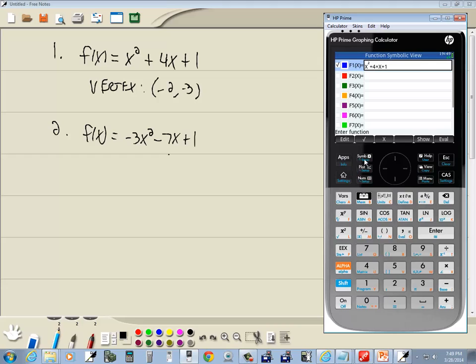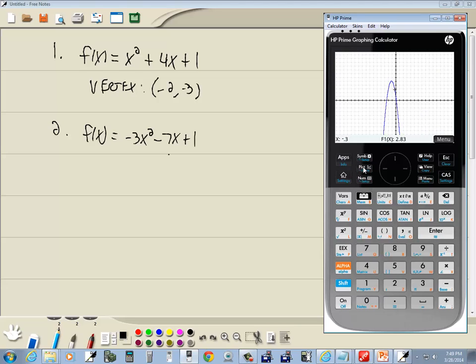I'll press my symbol, go backspace to clean that out. Negative 3, and then my x key, x² - 7x + 1. And then I'll press enter. And now I'll press plot to graph this.